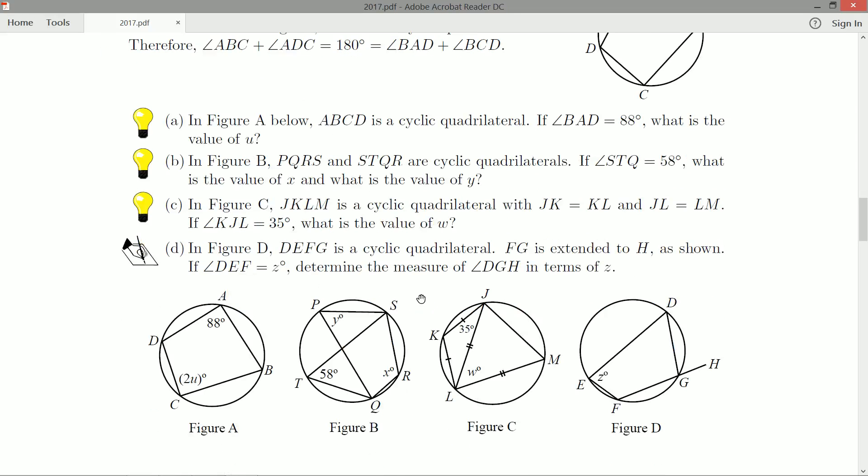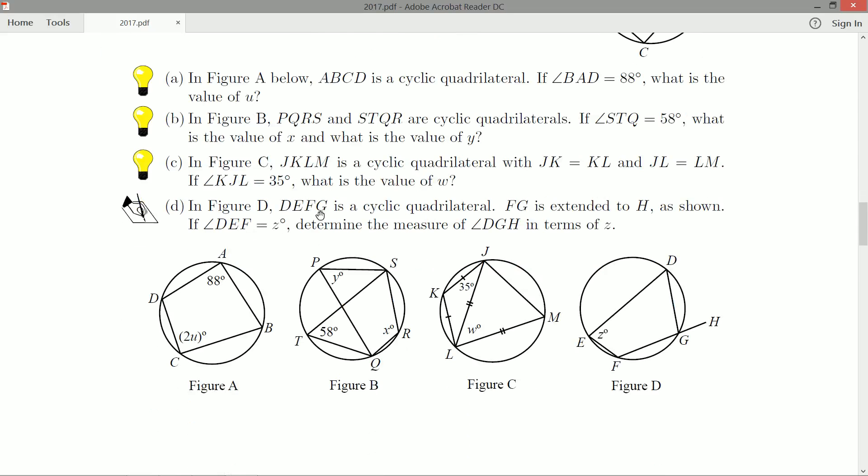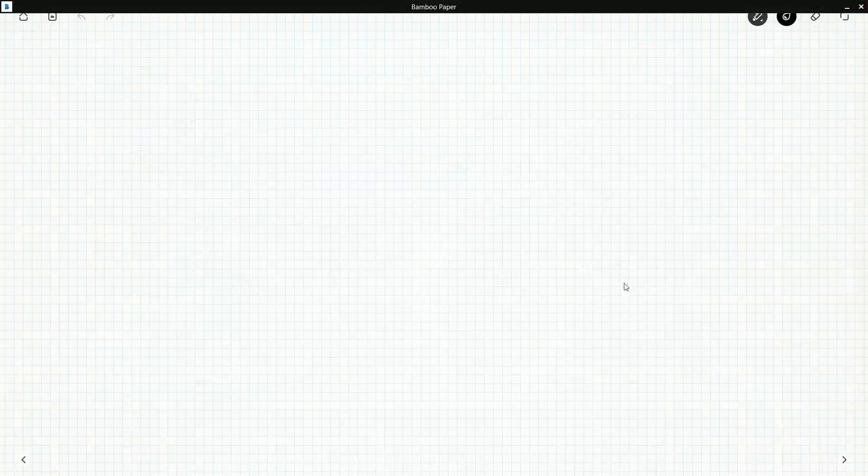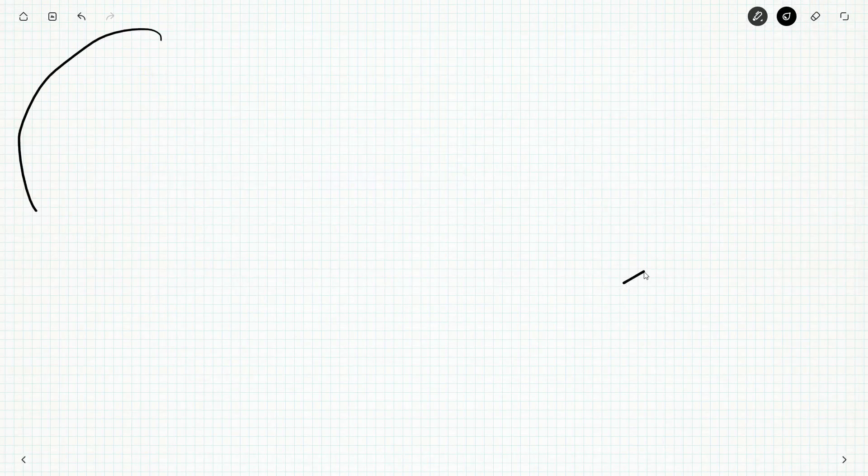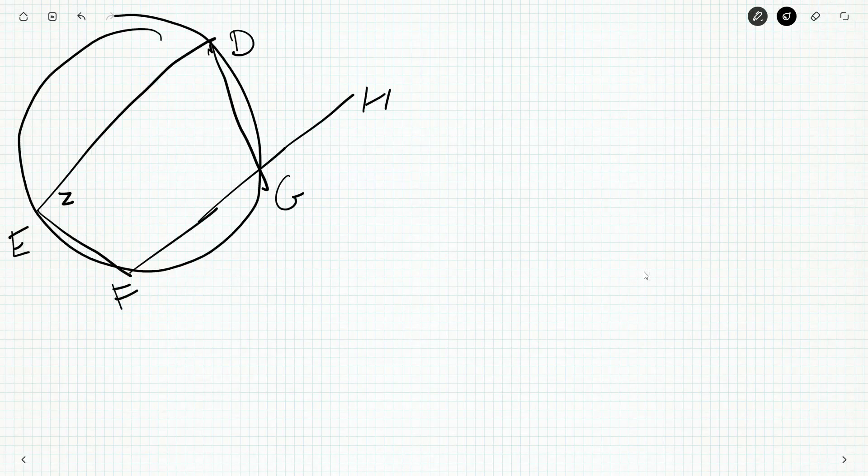In figure D, DEFG is a cyclic quadrilateral. FG is extended to H as shown. If angle DEF is z, determine the measure of angle DGH in terms of z. It's going to be z, isn't it? Yeah, it's just z. I was expecting more from part D. We'll see why it's z in just a second.